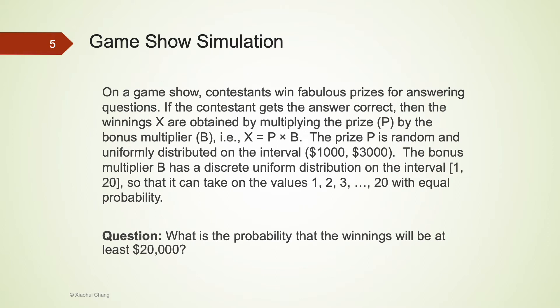Let's take a look at the introductory example for this module, Game Show Simulation. On a game show, contestants win fabulous prizes for answering questions. If the contestant gets the answer correct, then the winnings are obtained by multiplying the prize with the bonus multiplier. So X is the winning, and P is the prize, B is the bonus multiplier.